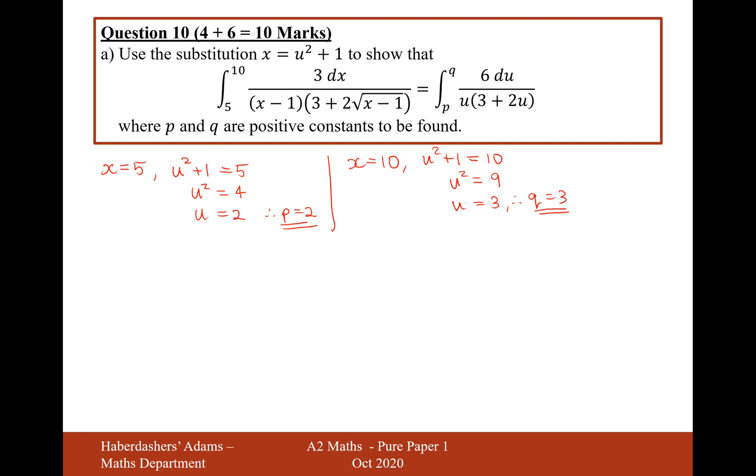So we've now found p and q, but let's now show that this integral on the left will equal the integral on the right. So if we say the integral of 3 over (x minus 1)(3 plus 2 root x minus 1) dx is equal to, so with the substitution, it's going to be the integral of 3 over (u squared plus 1), so that would just be over u squared now.